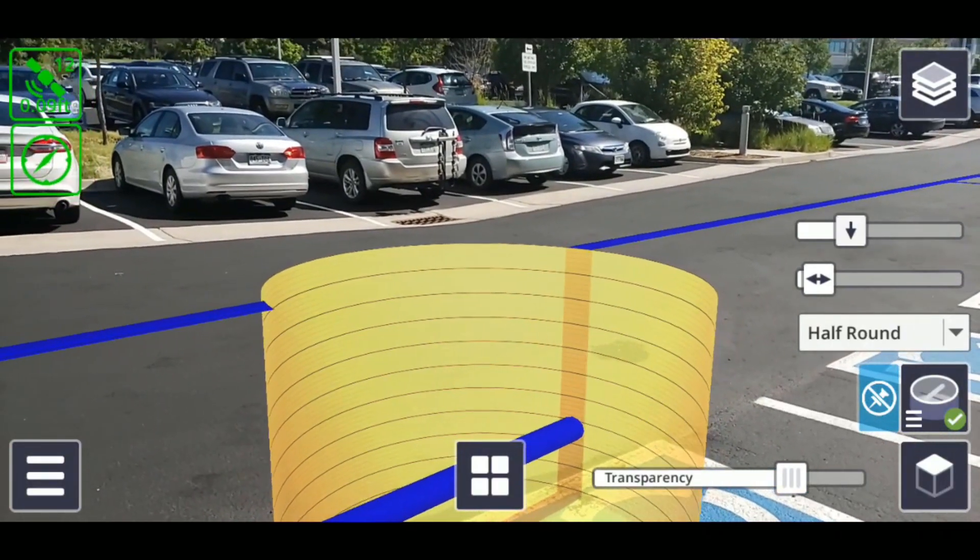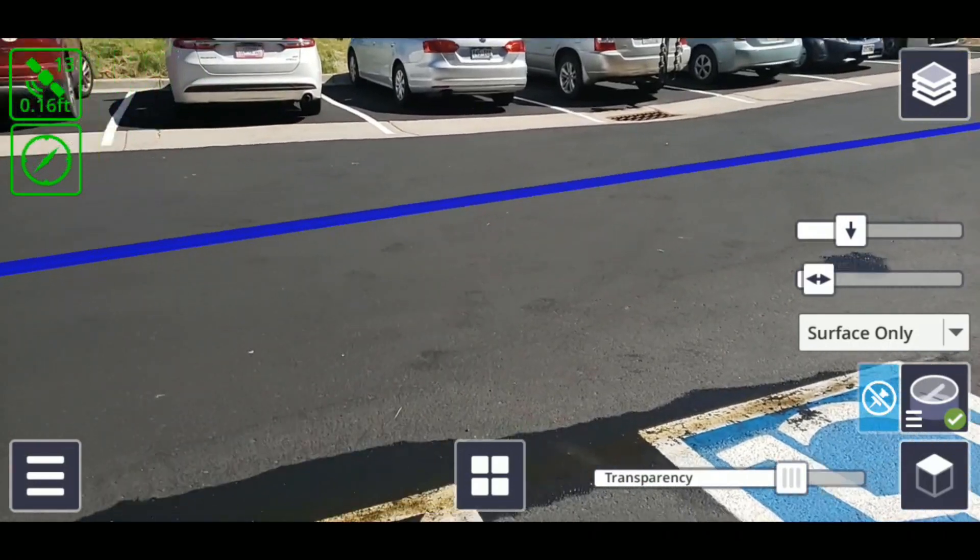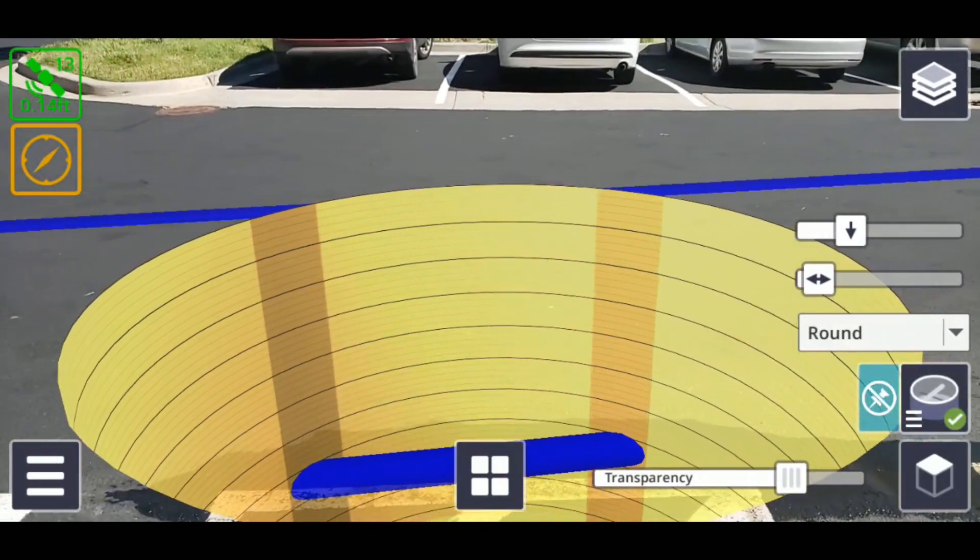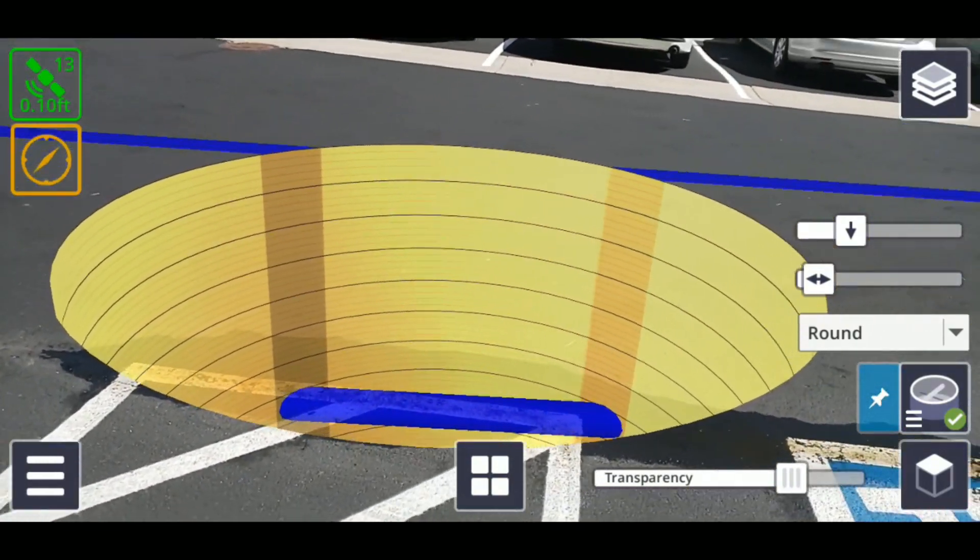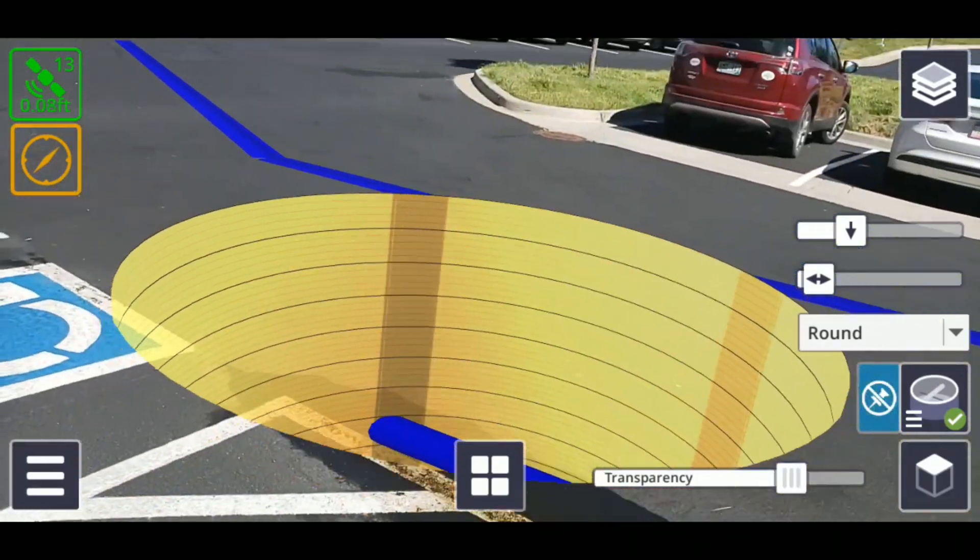To the left of the pit view icon, there is also a blue pin button. Tapping this locks the pit to its current location, allowing you to walk around and look into the pit itself. Tapping this button again unlocks the pit, making it follow your phone's camera once more.